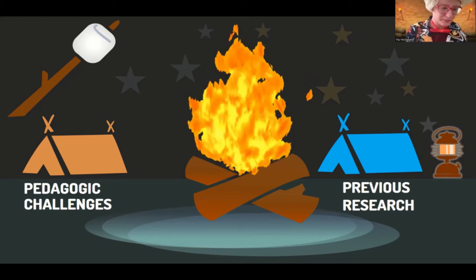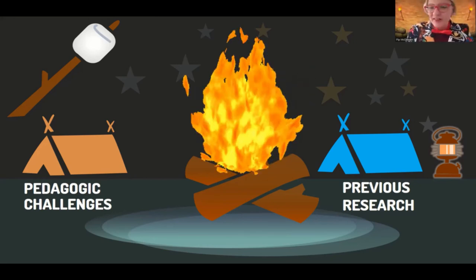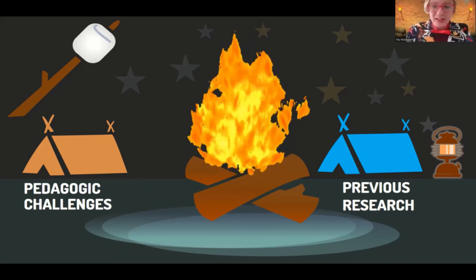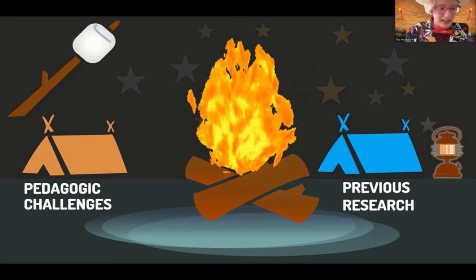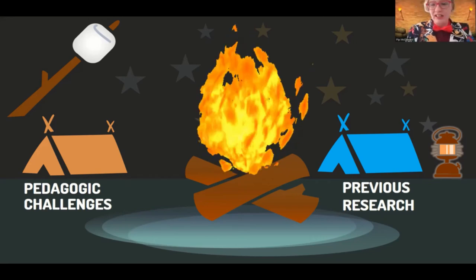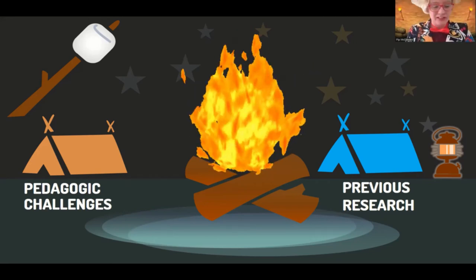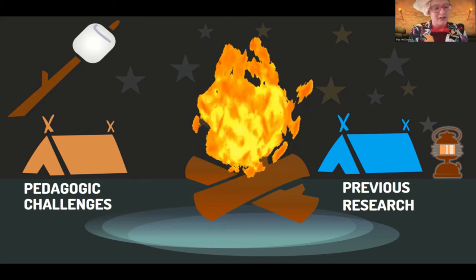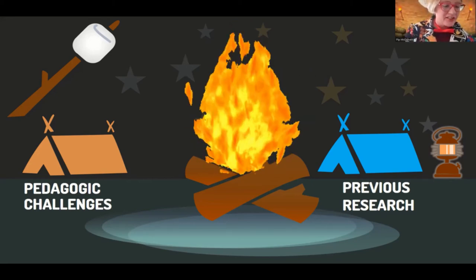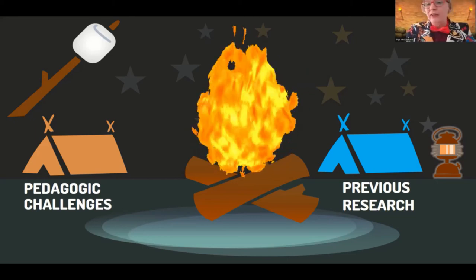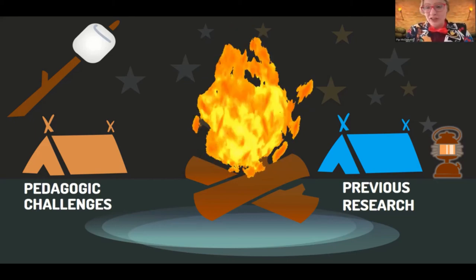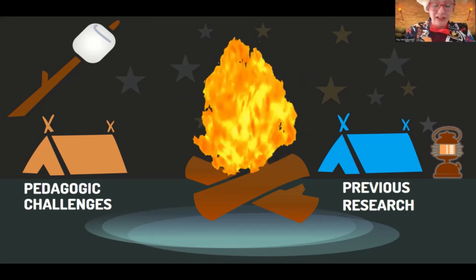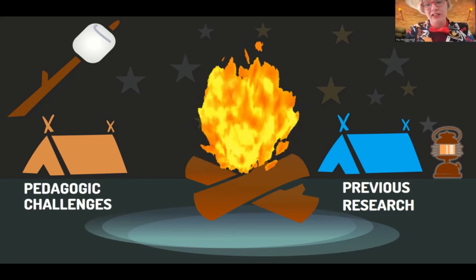We tried what everyone else was doing: polling, breakout rooms, and VVox. VVox was a game changer — it's a polling tool that also has features such as word clouds, making the polling and Q&A experience more exciting. One way I thought we could try to engage students interactively and collaboratively was to use social annotation. Zoom has its own annotation feature and a whiteboard — slightly different, but you can combine them to create a learning experience.